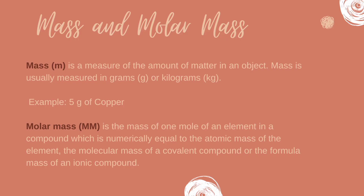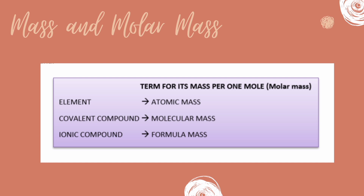Next, we have mass and molar mass. Mass is the measure of the amount of matter in an object or substance — for example, 5 grams of copper wire. On the other hand, molar mass refers to the mass of one mole of an element or compound, which is numerically equal to its atomic mass, molecular mass, or formula mass.